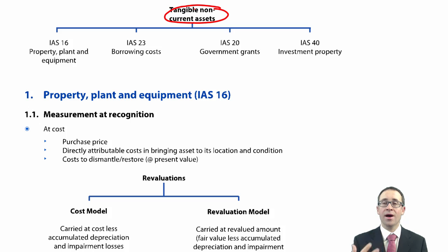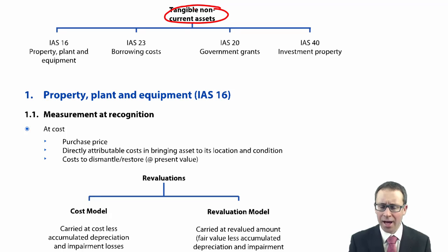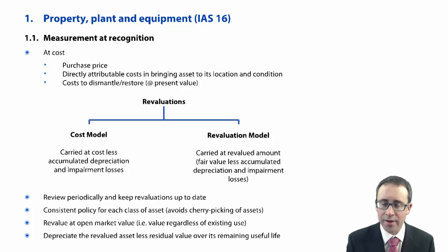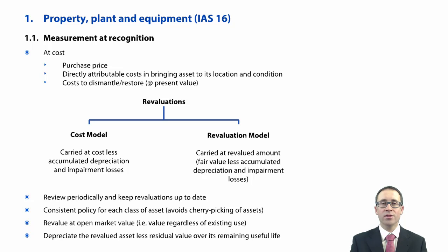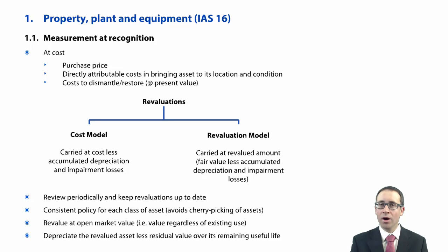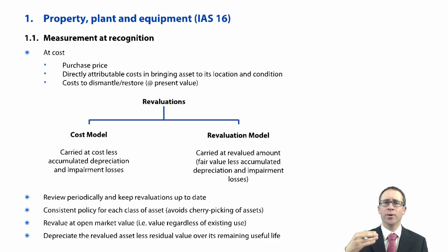Investment property covers land or buildings held for capital appreciation or rental purposes. Let's focus on PPE and IAS 16. You do not need to know the accounting standard number — if you do, great, but don't try to guess it and state it in the exam; you get no credit for it. Whenever you look at an accounting standard, always think about initial recognition, subsequent measurement, and then disposal.